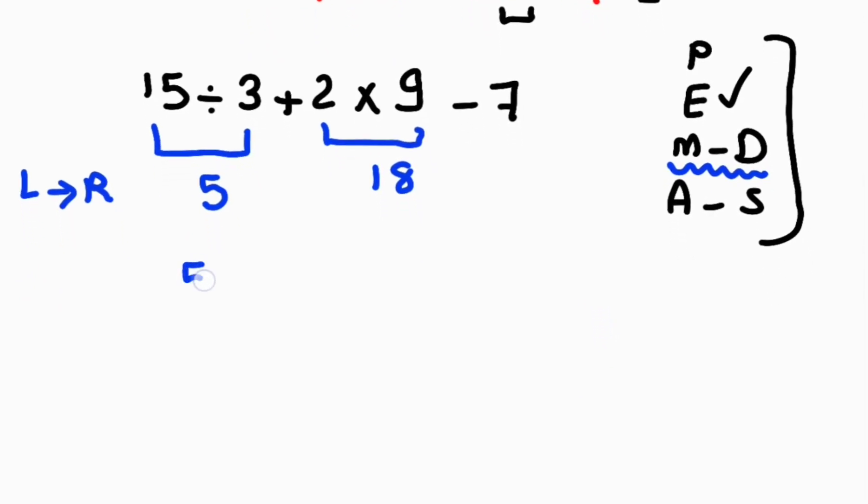We have 5 plus 18 minus 7. According to PEMDAS, as we know, addition and subtraction are equally important, and we have to solve from left to right again.